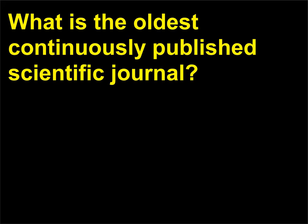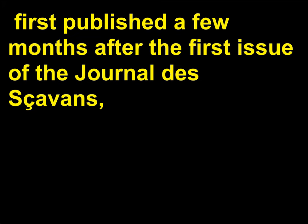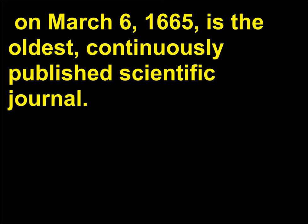What is the oldest continuously published scientific journal? The Philosophical Transactions of the Royal Society of London, first published a few months after the first issue of the Journal des Sçavans, on March 6, 1665, is the oldest continuously published scientific journal.